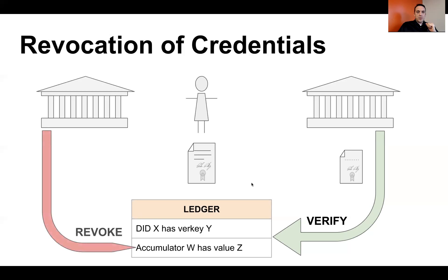If the issuing institution decides they want to revoke the credential, they go and change — by adding a replacement record — the value of accumulator W on the ledger. When that replacement record is written, the next time that verification happens it will fail, because the math problem can no longer be solved by the person who holds the credential. As a result, the relying party or verifier knows that the credential has been revoked.